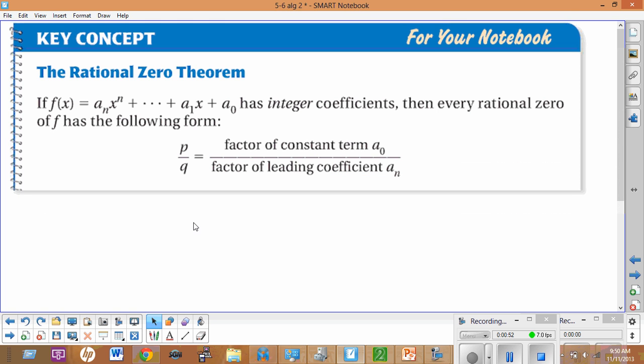The first thing we have to look at is the rational zero theorem. The rational zero theorem says if f(x) equals a_n x^n plus dot dot dot plus a_1 x plus a_0 and it has integer coefficients, then every rational zero of f has the following form: p divided by q.